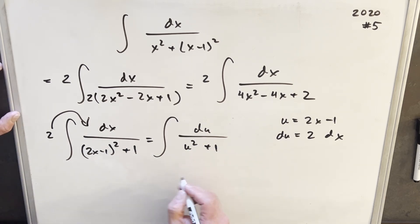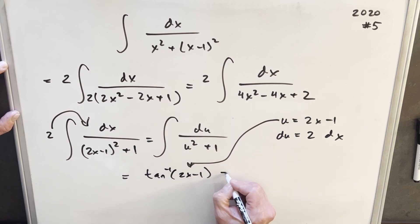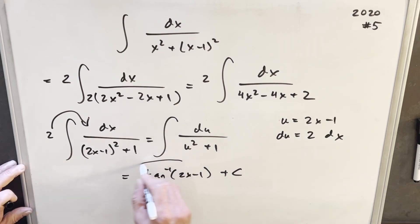This is actually just a very common integral. This is just going to be arctan, inverse tangent of u. But let's just back substitute all in one step because we have it right here. So our u value is 2x minus 1 plus C. And that's it. We're done.